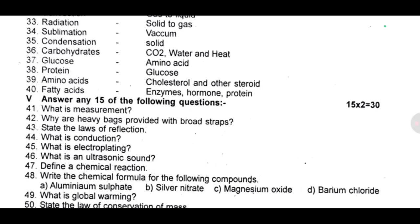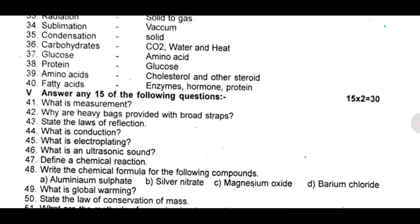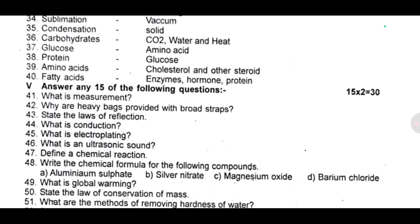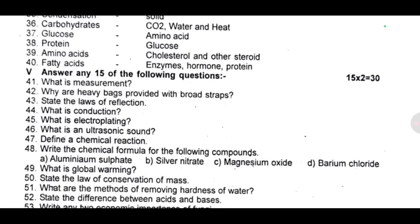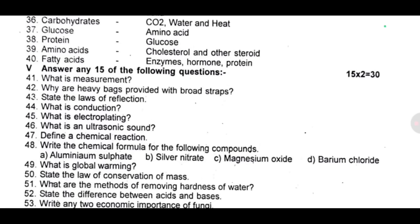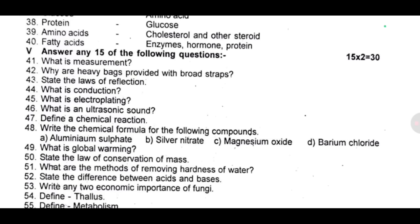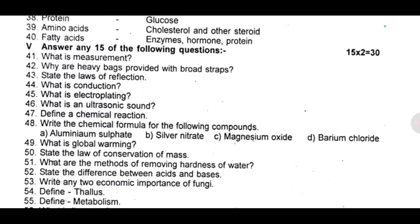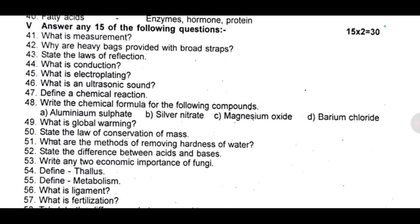Forty-five: what is electroplating? Forty-six: what is ultrasonic sound? Forty-seven: define a chemical reaction. Forty-eight: write the chemical formula for the following compounds — aluminum sulfide, silver nitrate, magnesium oxide, barium chloride. Forty-nine: what is global warming? Fifty: state the law of conservation of mass. Fifty-one: what are the methods of removing hardness of water? Fifty-two: state the difference between acids and bases. Fifty-three: write the economic importance of fungi. Fifty-four: define thallus. Fifty-five: define metabolism. Fifty-six: what is ligament?